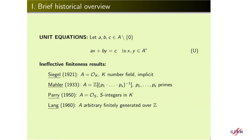Let me start with unit equations. Let A be as above, that is a finitely generated domain which can contain transcendental elements too. Let A, B, C be non-zero elements of A, and consider this equation where A* denotes the unit group of A, that is the multiplicative group of invertible elements.